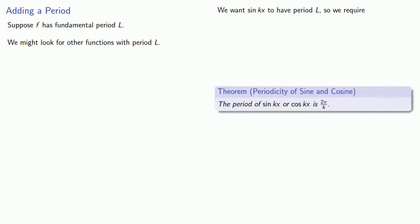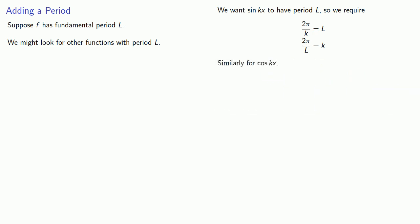Let's think about that. Suppose our function has fundamental period L. We might begin by looking for other functions with period L. Suppose we want sin kx to have period L. The period of sin kx or cos kx is 2π/k. So we require 2π/k = L, which means k = 2π/L. The same argument holds for cos kx. So sin(2πx/L) and cos(2πx/L) have period L.